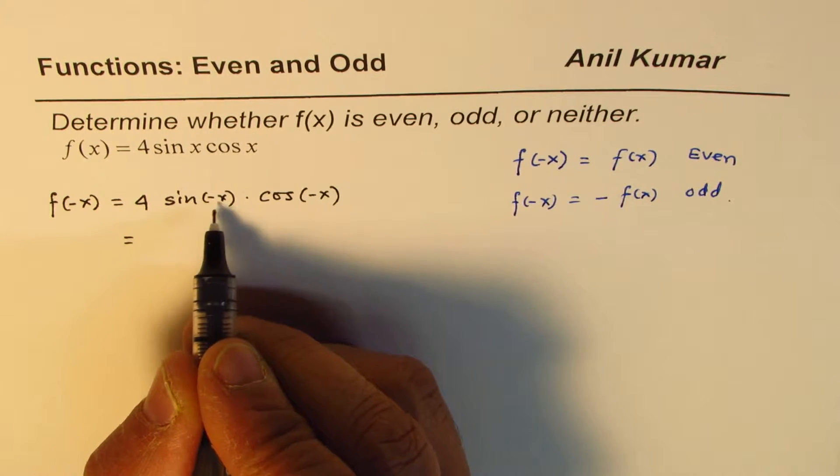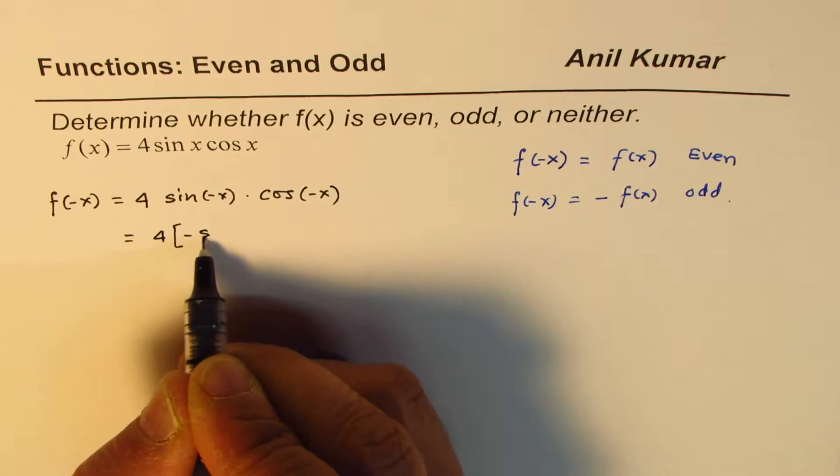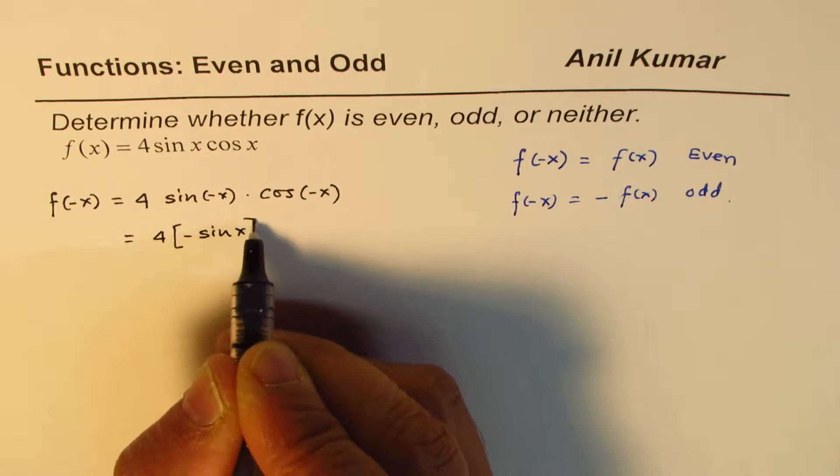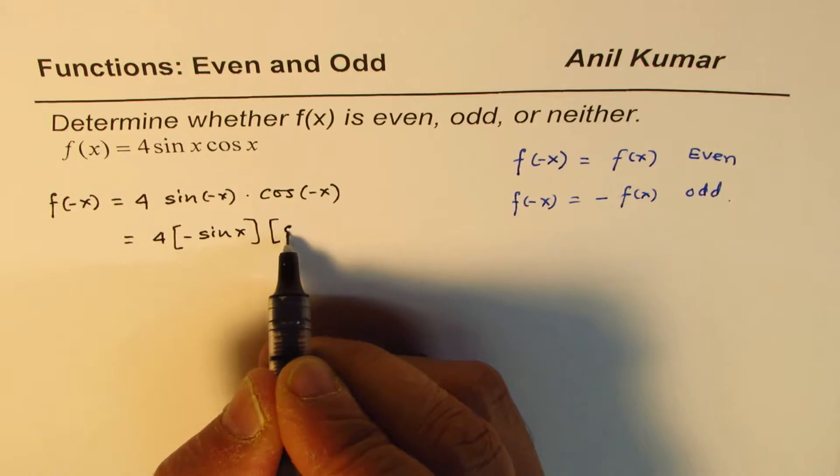So we can write this as 4 times -sin(x). Cosine is an even function, so cos(-x) is cos(x).